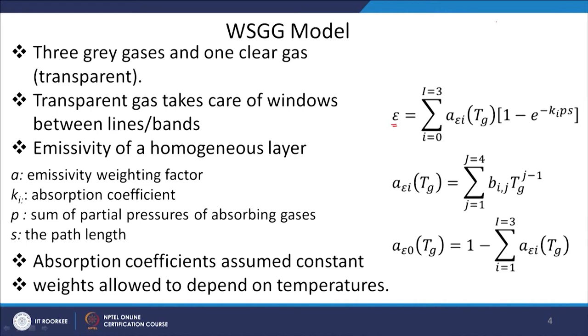In this model, we normally take a number of gray gases — typically 4 gray gases are used. Out of these 4, one will be a transparent gas, meaning the absorption coefficient is 0. This transparent gas represents the windows between the absorption bands — the rotational vibrational bands. As we have seen, a gas may have a number of rotational vibrational bands, and the bands have separation windows which transmit radiation coming from the wall. So this model also represents one transparent window — a transparent gas with absorption coefficient equal to 0.